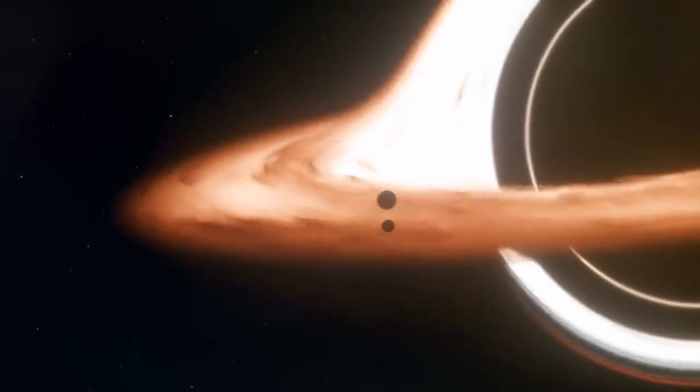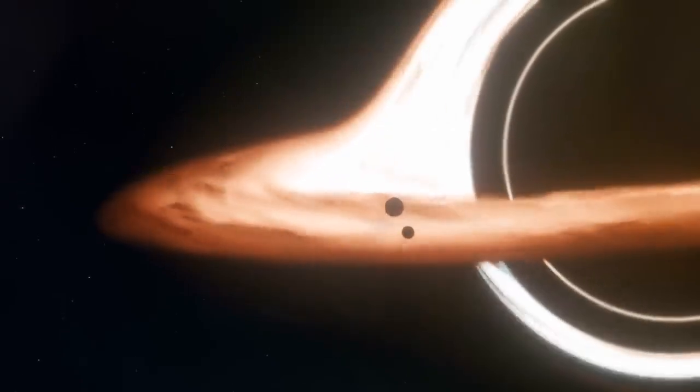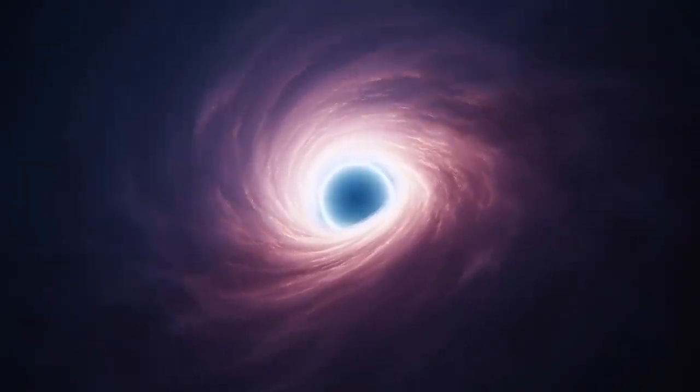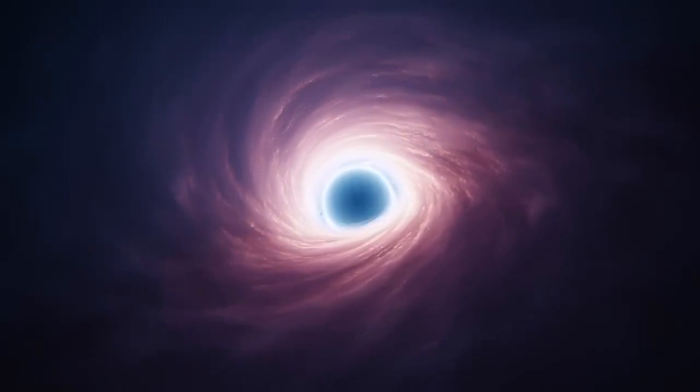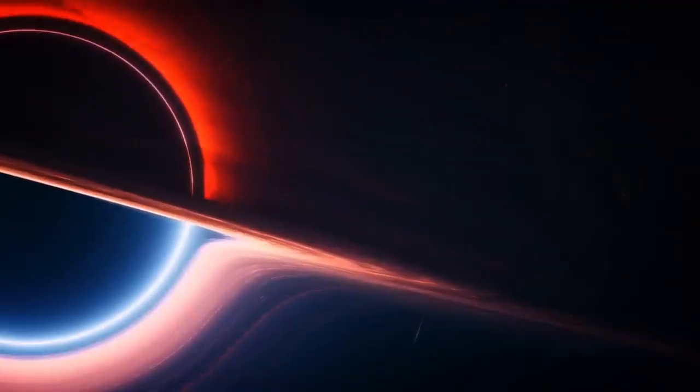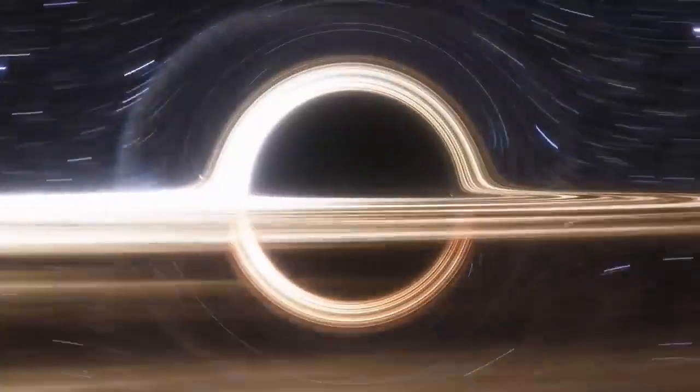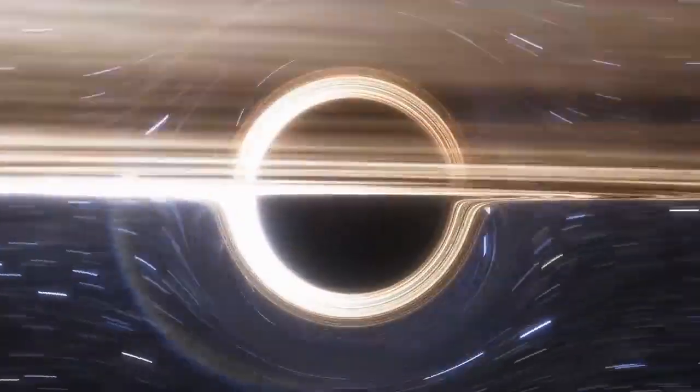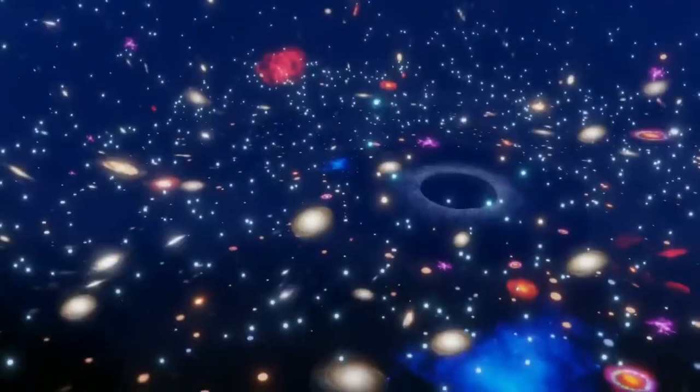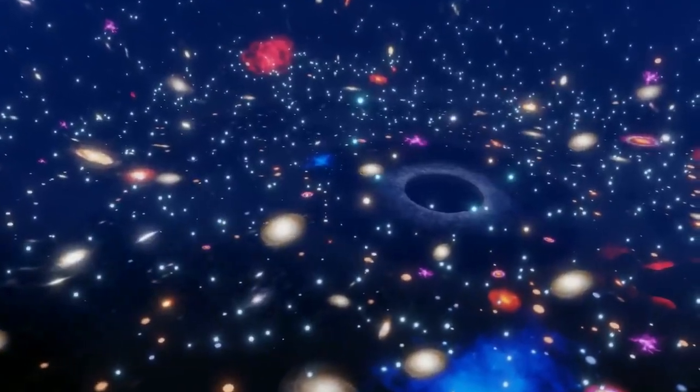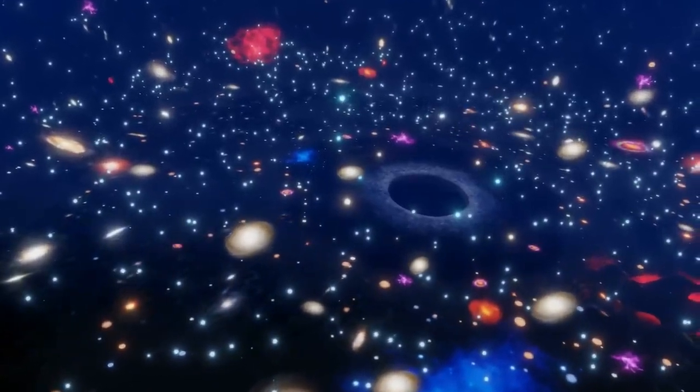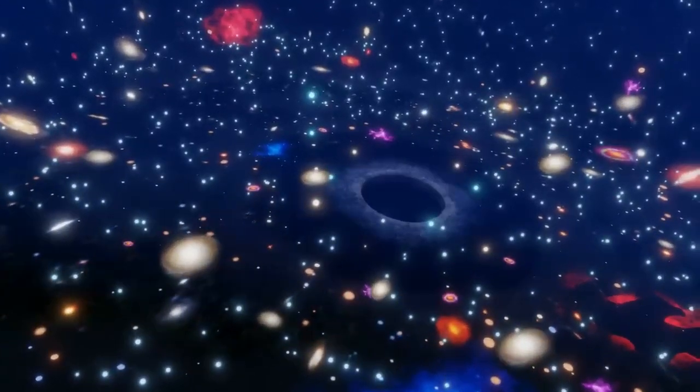In this context, the event horizon establishes the limit beyond which events remain perpetually concealed from our observational abilities. The event horizon marks the boundary beyond which events cannot affect us or be observed by us. It's a frontier of causality beyond which the universe unfolds in ways we can never hope to witness or influence.